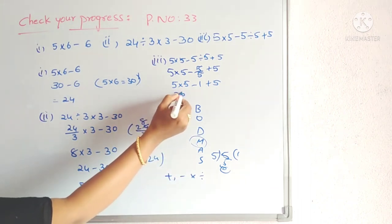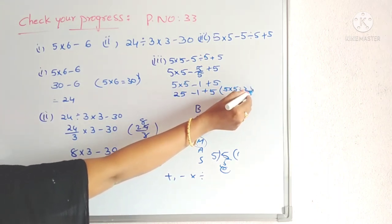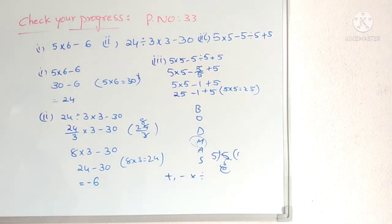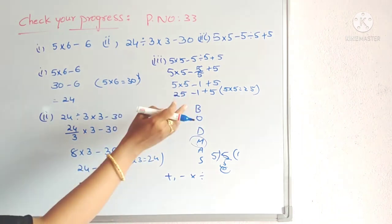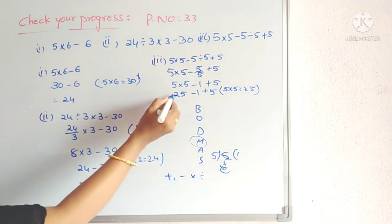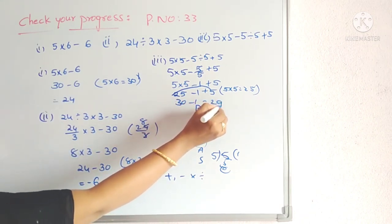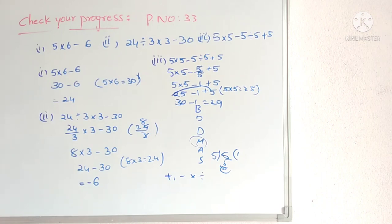Now we have addition and subtraction. Don't do subtraction first. We first do addition: 25 + 5 = 30, then 30 − 1 = 29. So the answer is 29. Students, I think you are understanding.